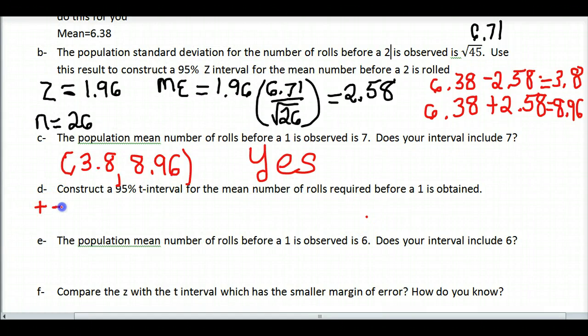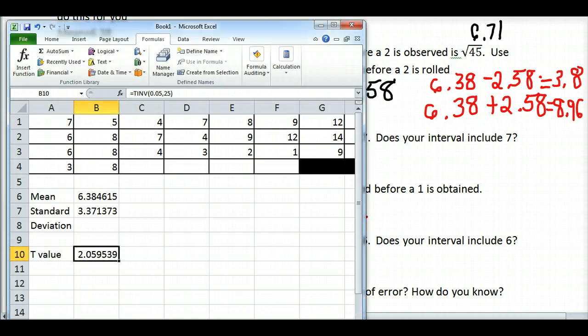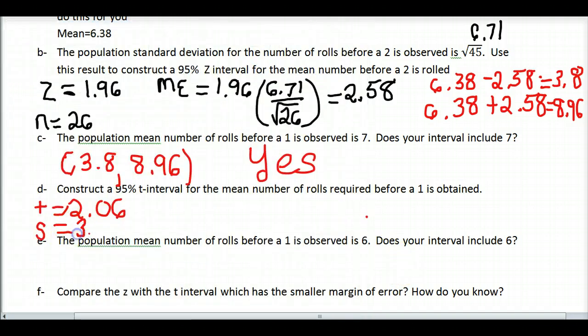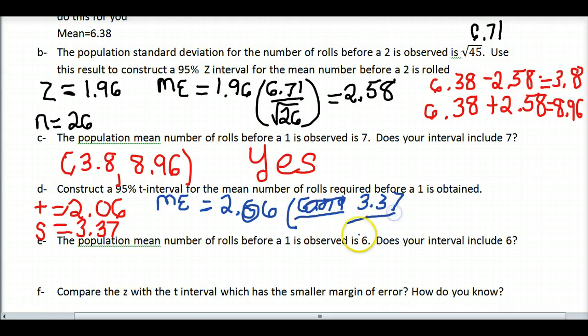From here, the process is much the same as the z interval. Except, I do not use the population standard deviation. I use my standard deviation, 3.37. But I follow things much the same. Margin of error is my t constant, 2.06, times my standard deviation over the square root of how many data points there are. We can use the calculator much the same way as we did before. I'm going to get a margin of error of 1.36.